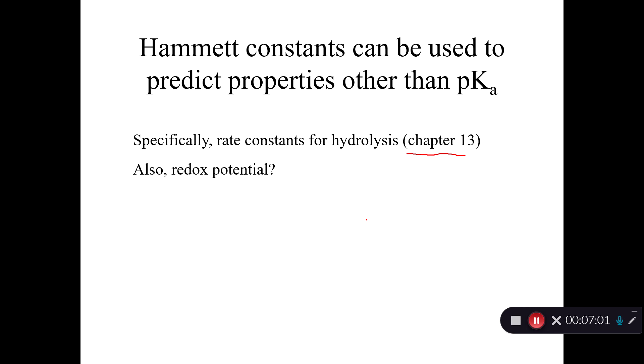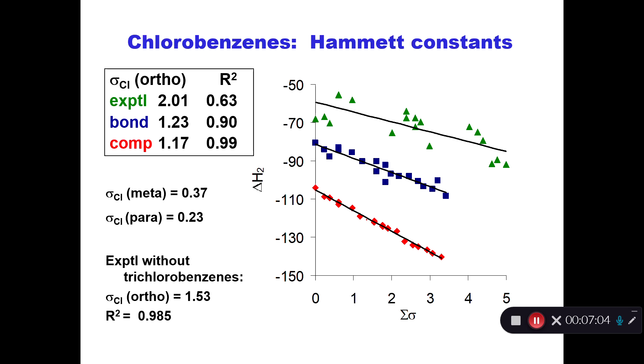And it turns out that you can use Hammett constants to do that too. So here's an example. This is where we used, again, here's the sum of the Hammett constants, and here's the delta H of that electron transfer reaction, that redox reaction. And you can see, it depends on which delta H's we use, whether we use those from computational chemistry or from bond contribution methods or experimental values. But either way, you get pretty strong correlations with the redox potential and the Hammett constants. So Hammett constants can be useful for lots of other things. And that's why I think it's important that you learn what they are and how to use them.